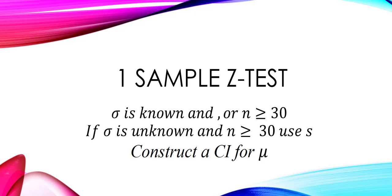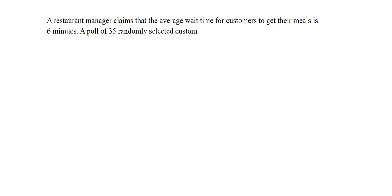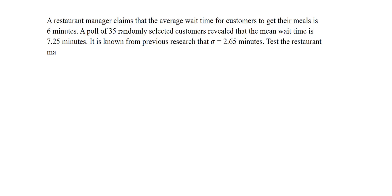We will look into the following example: A restaurant manager claims that the average wait time for customers to get their meals is six minutes. A poll of 35 randomly selected customers revealed that the mean wait time is 7.25 minutes. It is known from previous research that the population standard deviation is 2.65 minutes. Test the restaurant manager's claim using a level of significance of 2%. Construct a 98% confidence interval for the population mean.